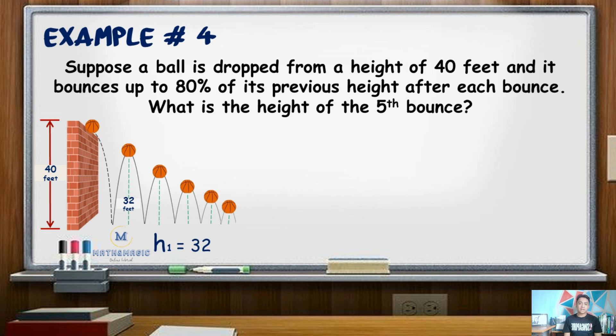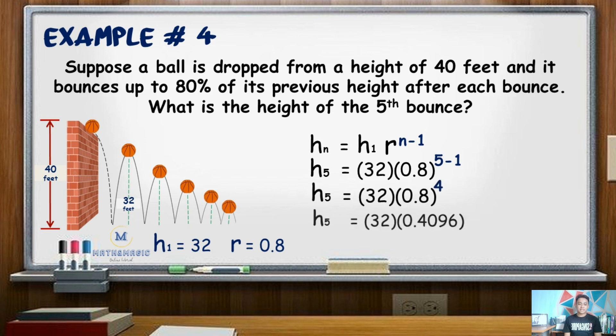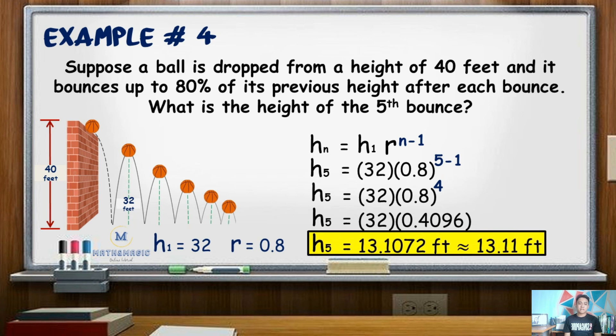Now, we can rewrite 80% into decimal, which is 0.8, then raise that by n minus 1, which is 5 minus 1 or 4. 0.8 raised to 4 is equivalent to 0.4096. Multiplying that by the first bounce, which is 32, gives us a height of 13.1072 or approximately 13.11 feet. Hence, the height of the 5th bounce is approximately equal to 13.11 feet.